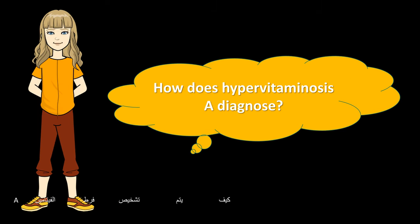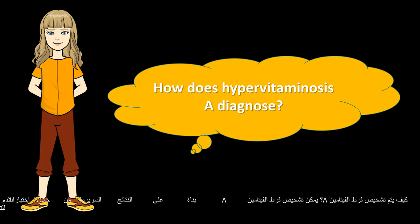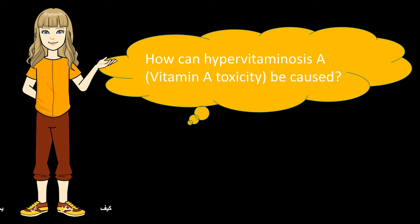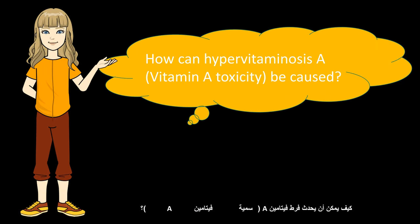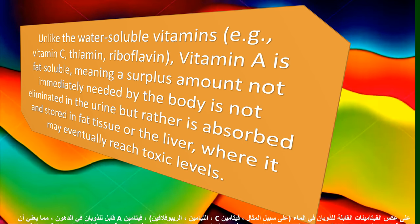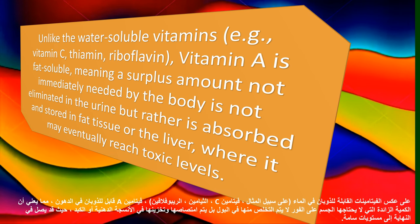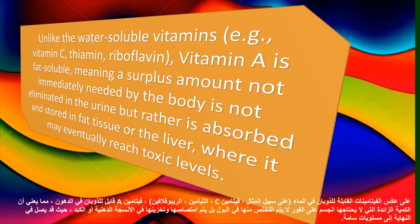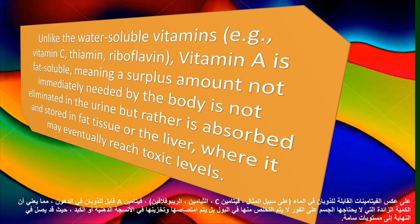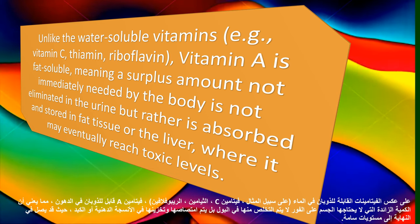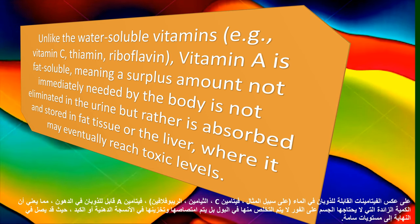How does hypervitaminosis A get diagnosed? Hypervitaminosis A can be diagnosed based on clinical findings through blood tests to check vitamin A levels. How can hypervitaminosis A be caused? Unlike the water-soluble vitamins — for example, vitamin C, thiamine, riboflavin — vitamin A is fat-soluble, meaning a surplus amount not immediately needed by the body is not eliminated in the urine but rather is absorbed and stored in fat tissue or the liver, where it may eventually reach toxic levels.